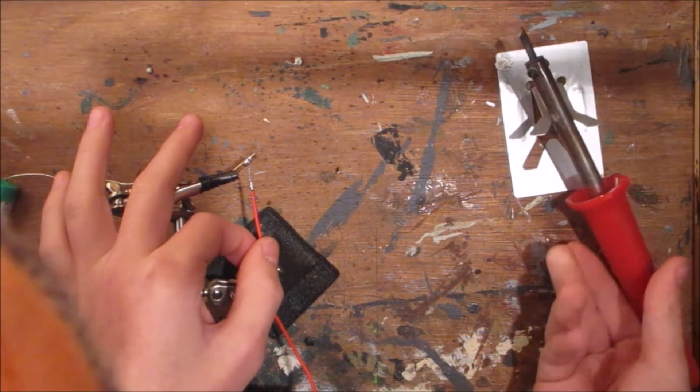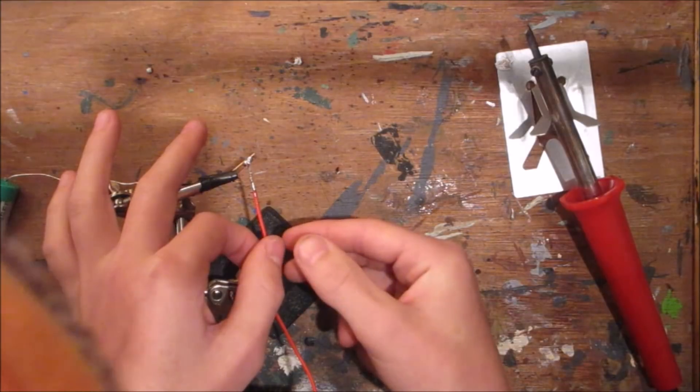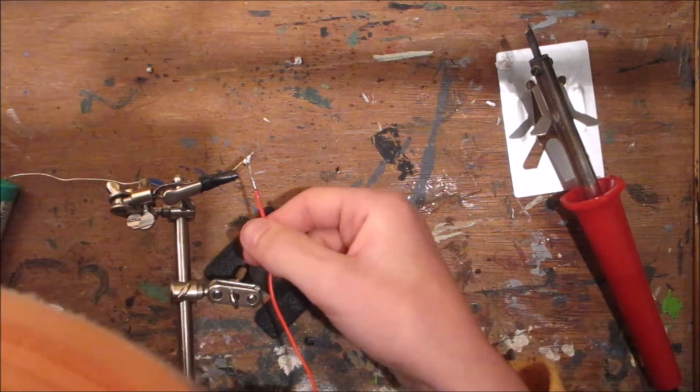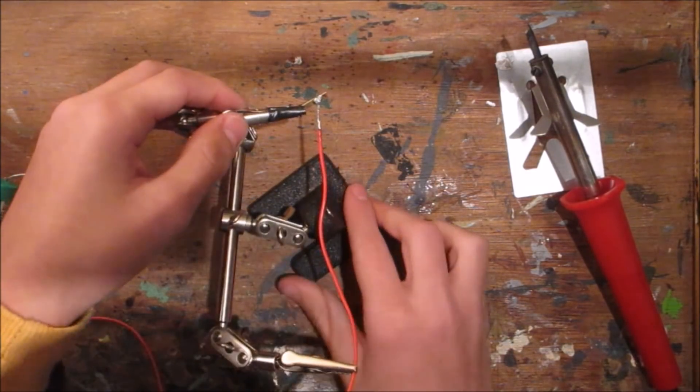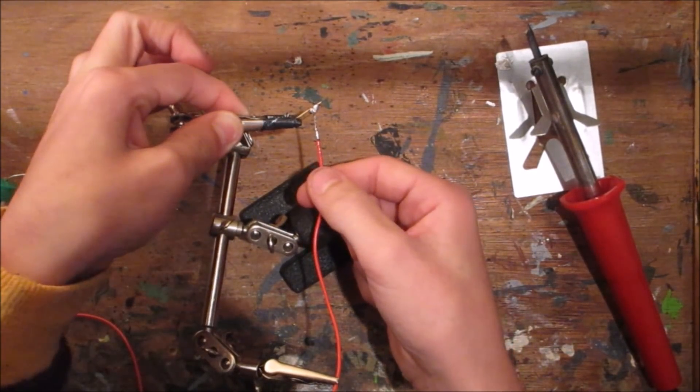And to know when the solder is hot enough, it should go a nice silvery colour. So that's now in there. And what I like to do as the camera can probably see is I like to do them so that the wire is sideways.